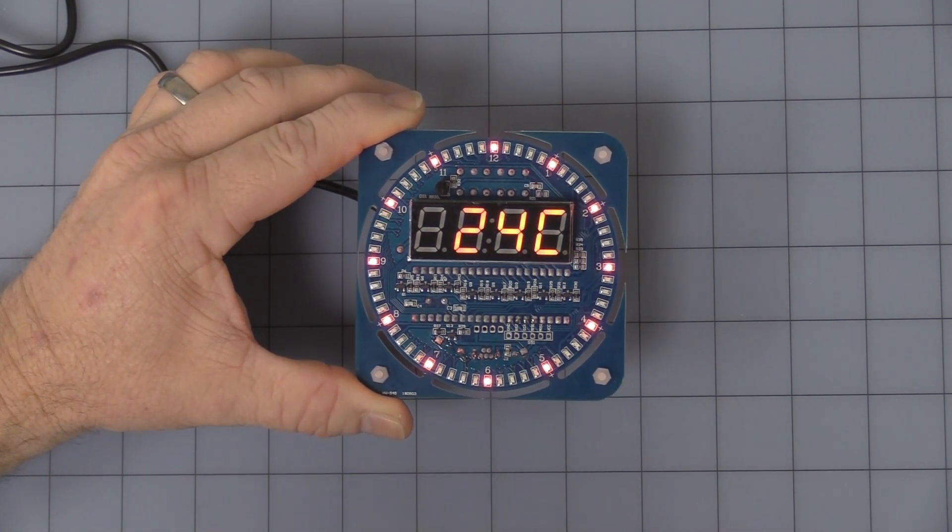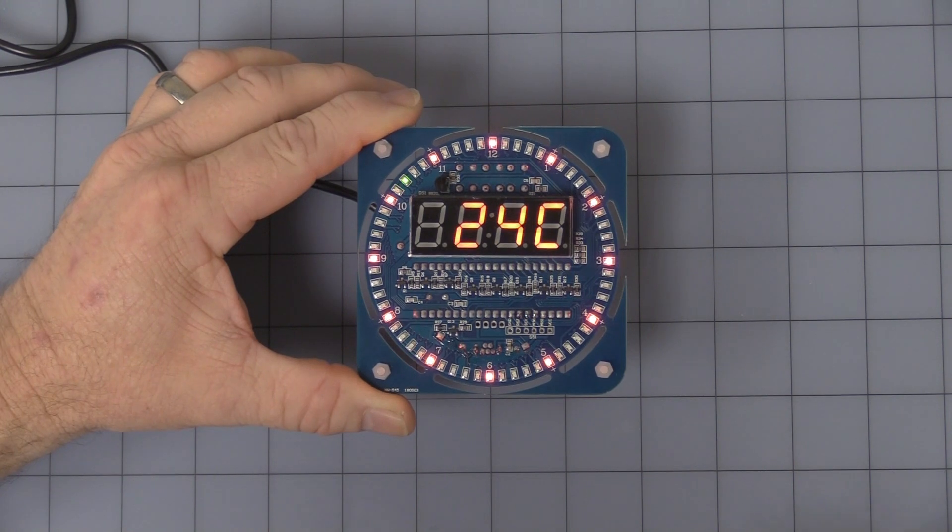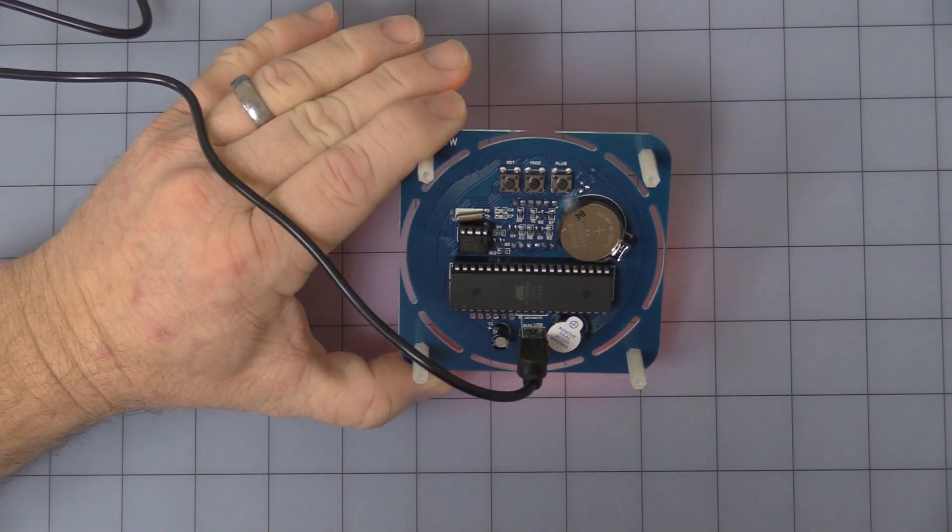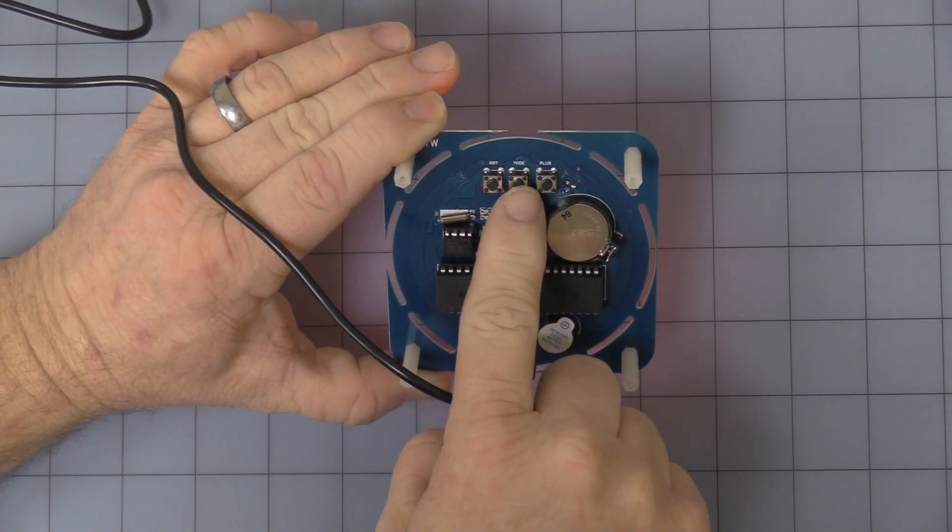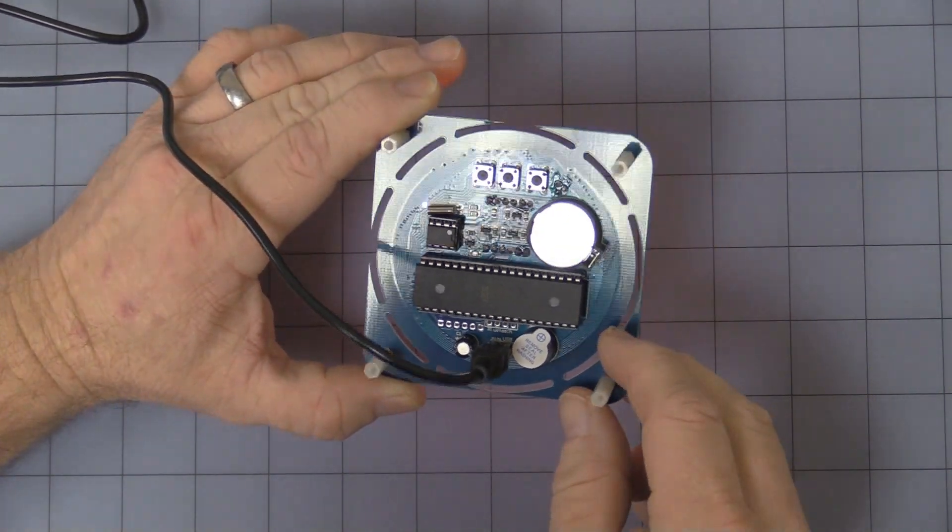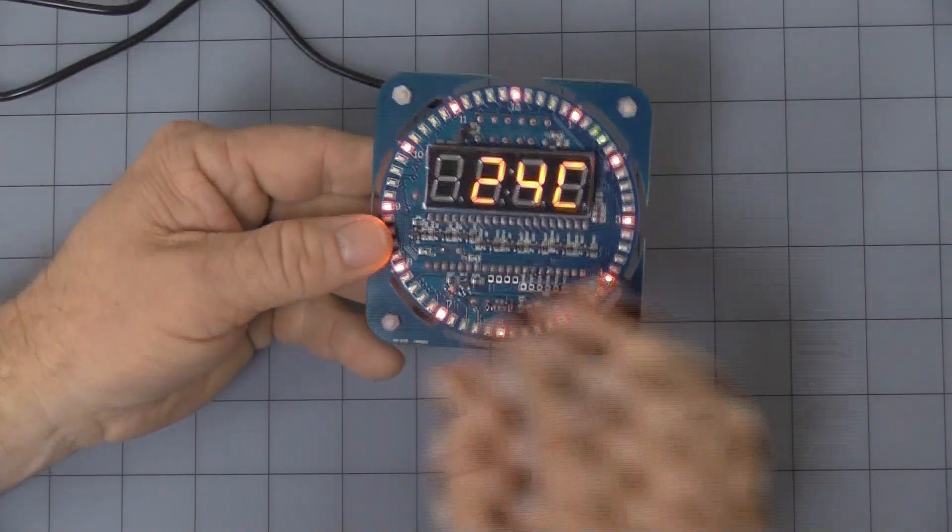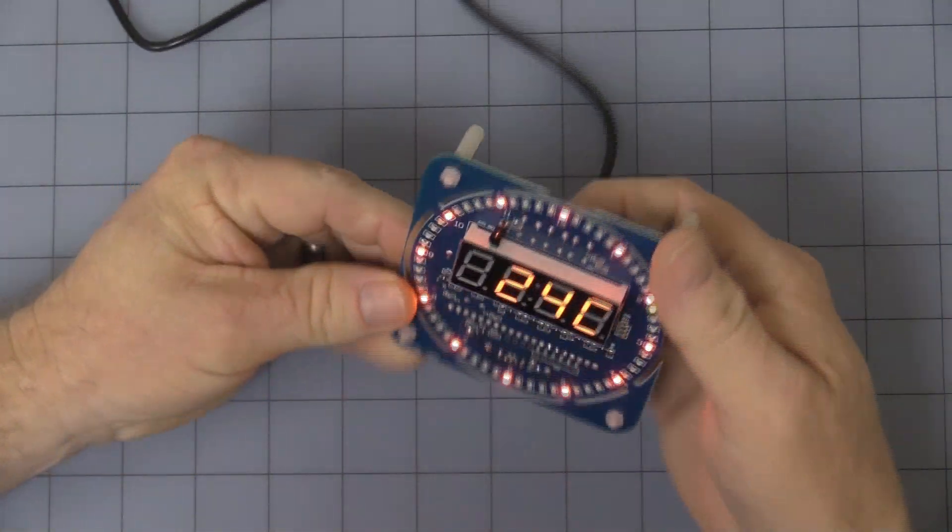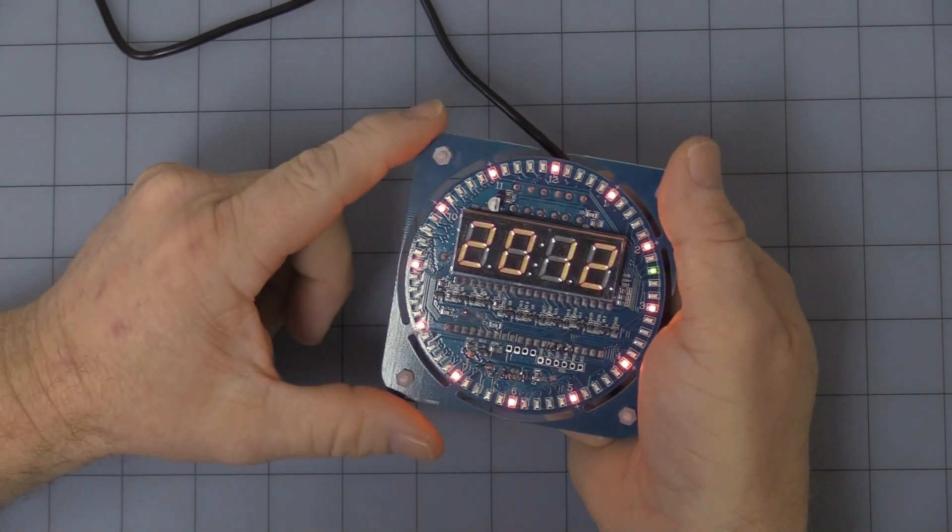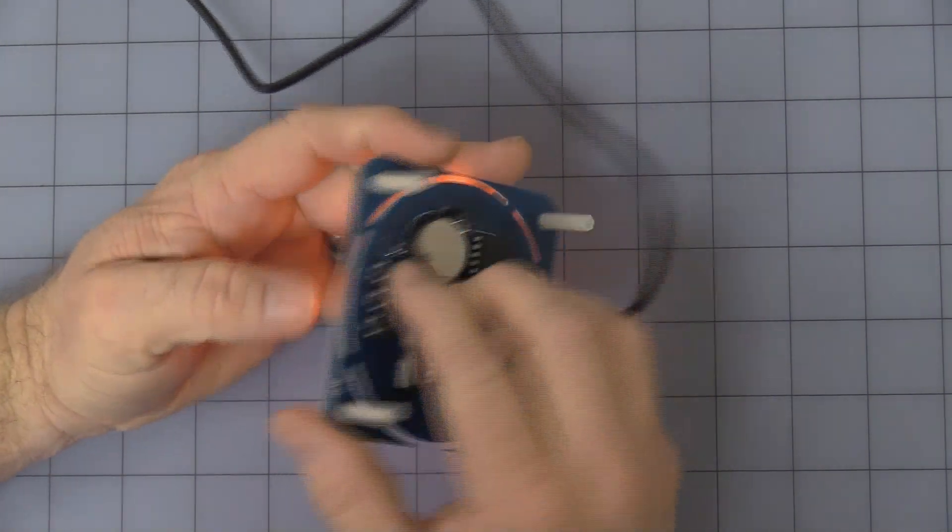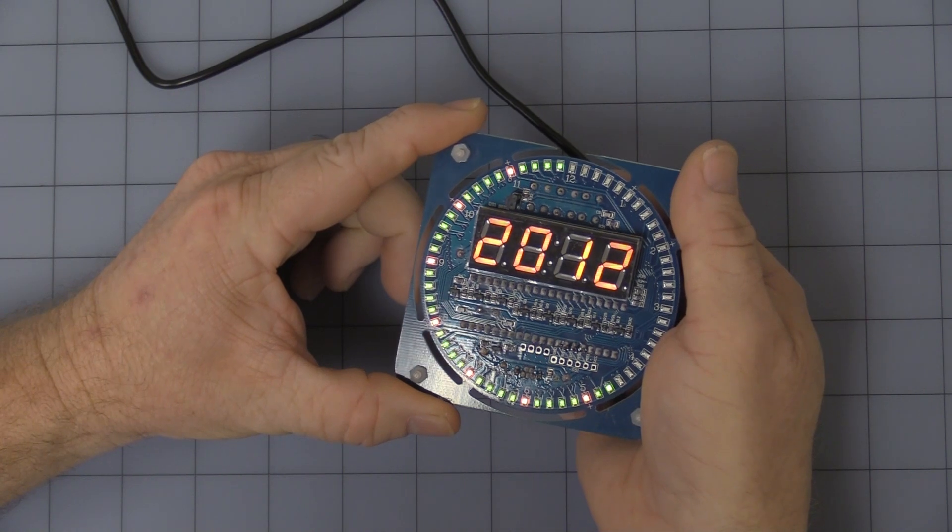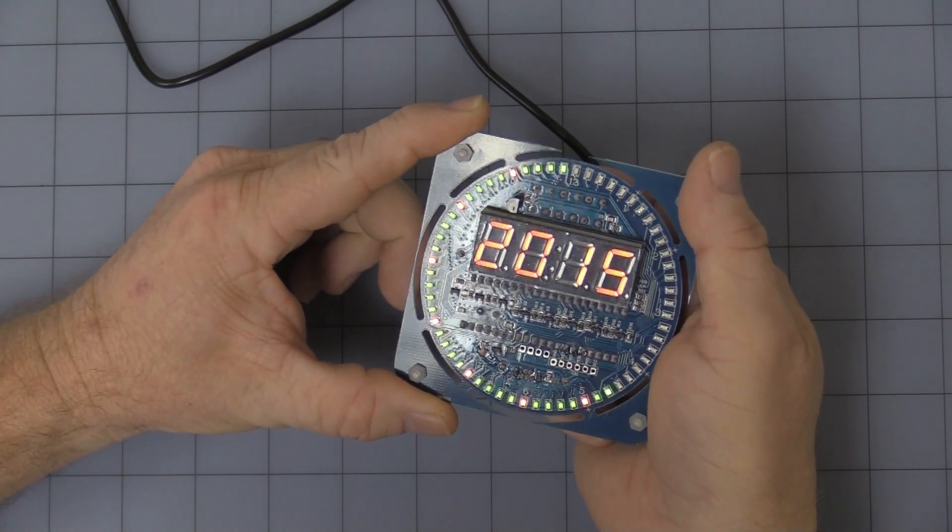Now on the back you have three buttons. One is marked reset, the middle one is mode, and the one to the right is plus. I'll show you how to program the unit. On the mode press once quickly and you're now flashing the year. You use the plus button to count up the years to 2019.